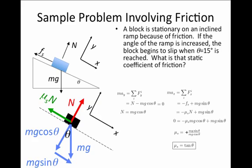We were told that theta is 15 degrees when this object starts to slip, so we can just insert tangent of 15 degrees, and that will give us a numerical value for the static coefficient of friction. Once again, notice that our answer did not depend on the mass at all.